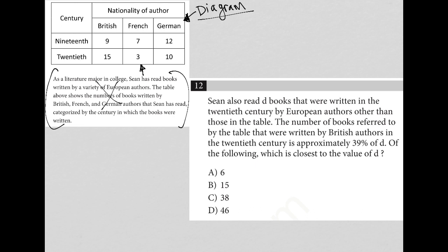And just for review, the table just shows the nationality of author of books that Sean has read. So we have British authors, French authors, and German authors, and then we have that further separated by whether or not the book was written in the 19th century or in the 20th century.